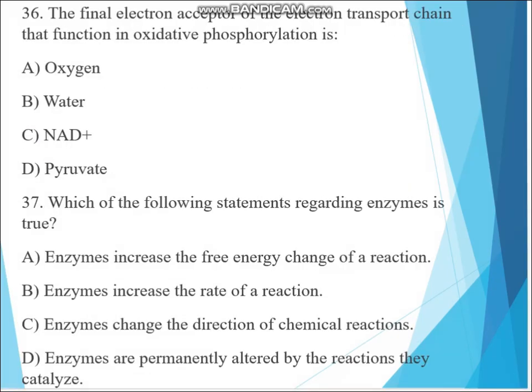Question 36. The final electron acceptor of the electron transport chain that functions in oxidative phosphorylation is: A. Oxygen, B. Water, C. NAD+, D. Pyruvate. The answer is oxygen. Oxygen is the final electron acceptor in the electron transport chain.